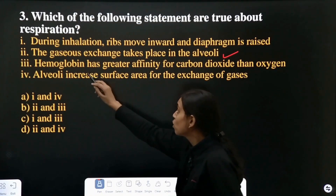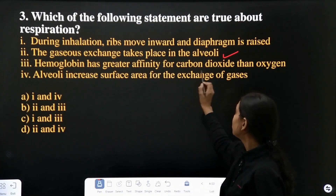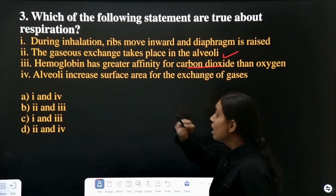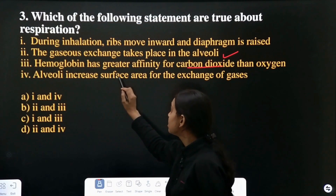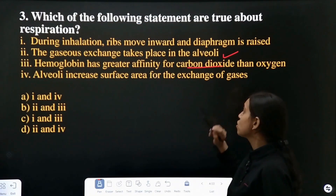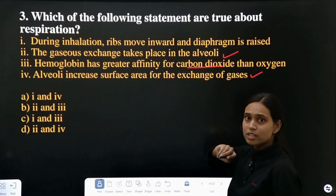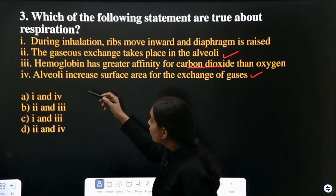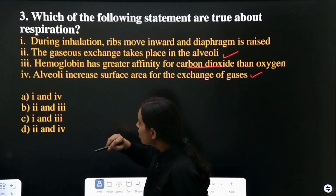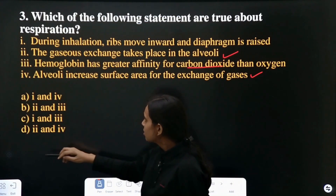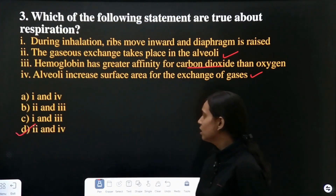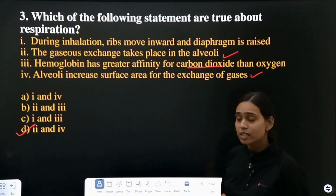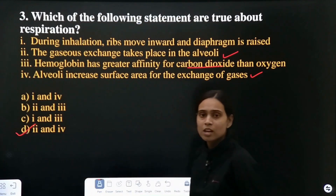Hemoglobin has greater affinity for oxygen, not for carbon dioxide. Alveoli increase surface area for the exchange of gases — that is correct. So the option where the second and fourth statements are correct is option D. The correct answer is option D.